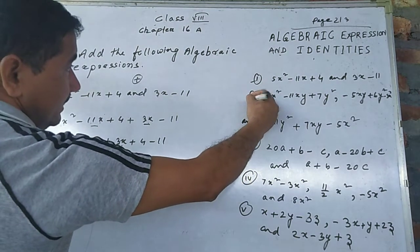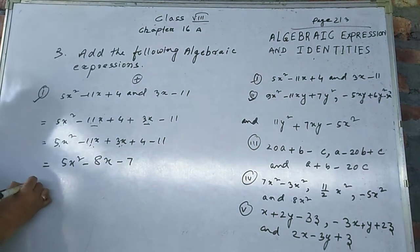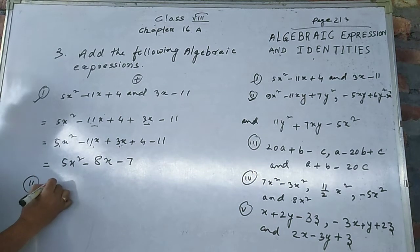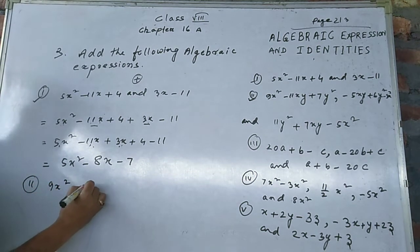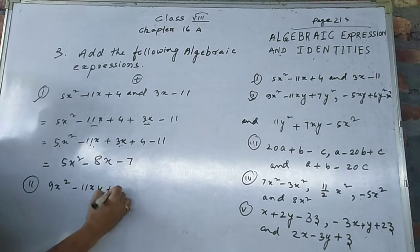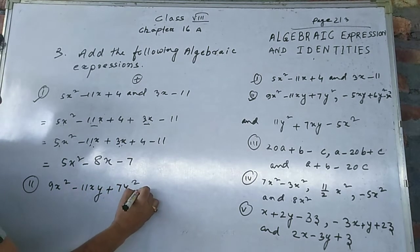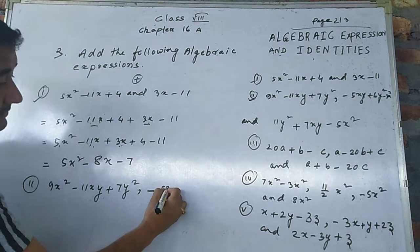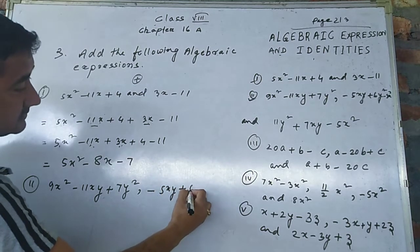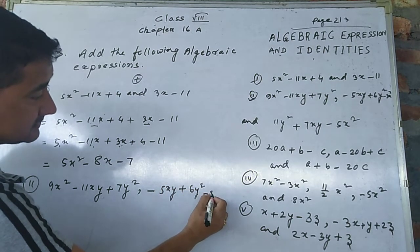Number two: 9x² minus 11xy plus 7y², 5xy plus 6y² minus 3x²,